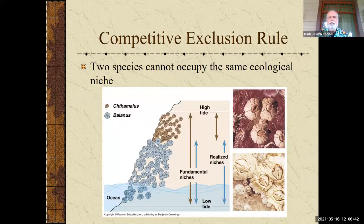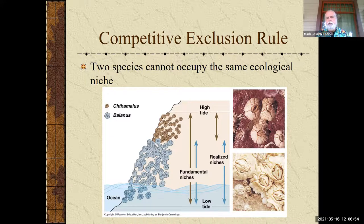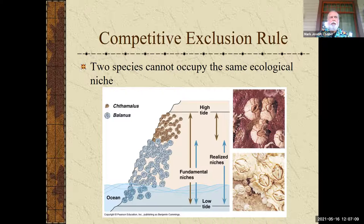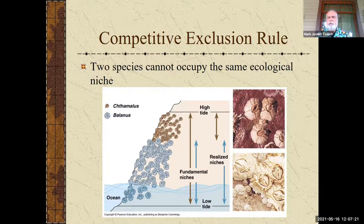Here is a statement: two species cannot occupy the same ecological niche. This is called the competitive exclusion rule. Is this true or not? This is true, although it really has to do with a timetable. On the short term, maybe they can live in the same space and do the same thing, but on the long term that is not the case. If two species are different and trying to do exactly the same thing, one is going to be better at it. Through Darwin's natural selection, one should take over and the other should fade away unless the environment changes.